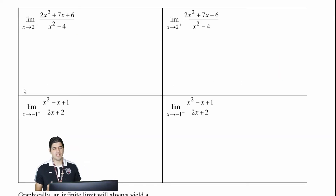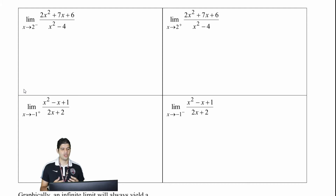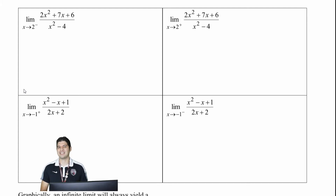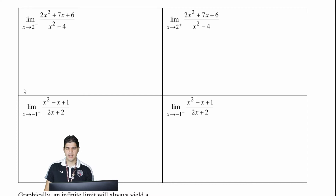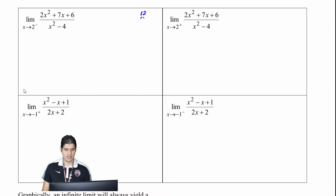So now that we've done some of the problems graphically, let's do it with some more calculus analysis that we've learned previously. Let's look at the limit as x approaches 2 from the left. First, we've got to factor that numerator. So 2 times 6 gives me 12, and two values that combine to give 12 and add to 7 — that's going to be 4 and 3. Divide them both by 2.